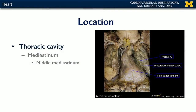The heart is located in the thoracic cavity — the space bounded by the ribs, the diaphragm, and the root of the neck. The thoracic cavity is broken up into three smaller sections: the paired pleura, which contain the lungs, and the central mediastinum.